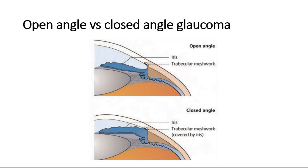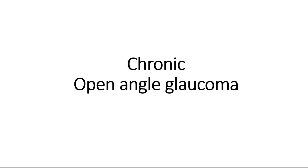To differentiate open angle versus close angle glaucoma: in open angle glaucoma, the obstruction is due to structural changes in the trabecular meshwork. In close angle glaucoma, the peripheral iris blocks the trabecular meshwork. Any blockage in this area causes an increase in intraocular pressure because the aqueous humor is unable to flow out into the venous system.